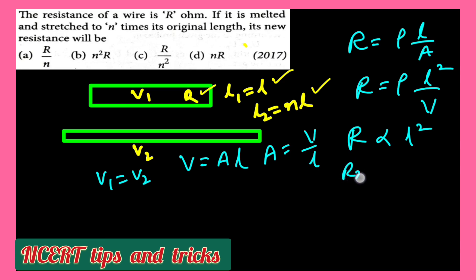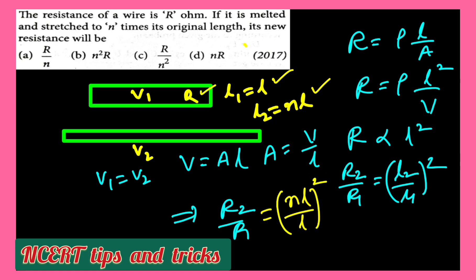Therefore we can write R2 by R1 equals L2 by L1 whole squared. This implies R2 by R1 equals nL by L whole squared. So L gets cancelled here.